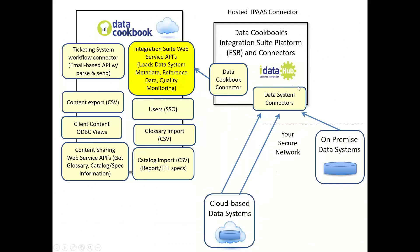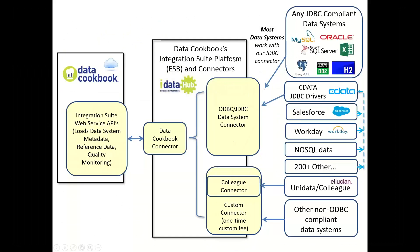From a security standpoint, having that connection happen inside your network makes a big difference. The iData Hub uses a standard JDBC connector to push information up, and that works with all sorts of database systems — anything you can hook a reporting tool up to, we can connect with.